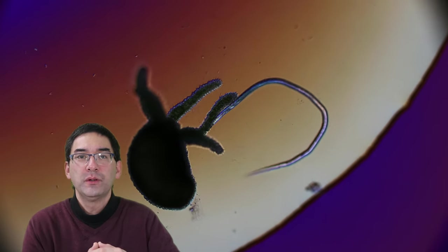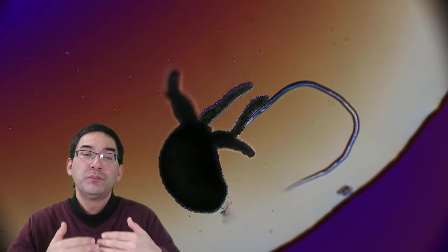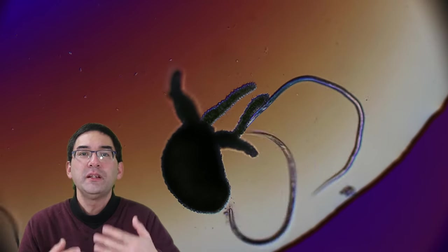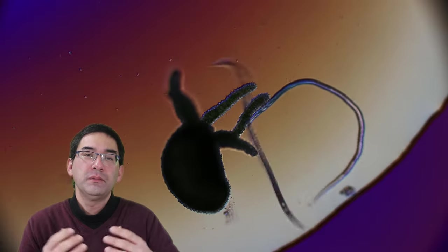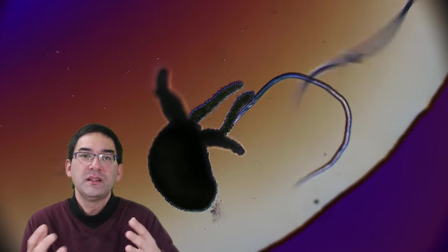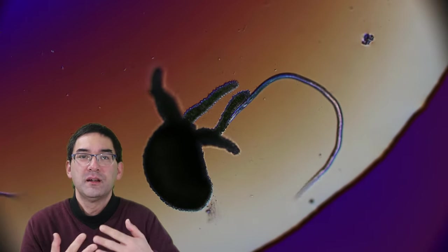And this is also one of the reasons why when a worm touches the tentacles of the Hydra, it will very quickly stop moving, because the poison that is released immediately paralyzes the worm.